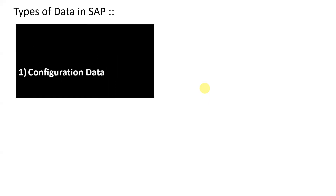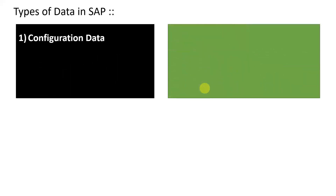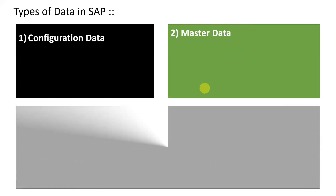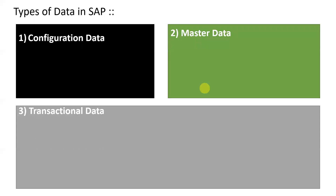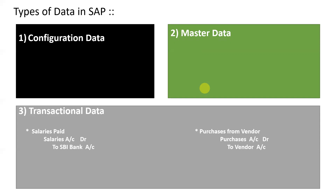The three types of data are: first, configuration data; second, master data; third, transactional data. Transactional data means the day-to-day business transactions which they are going to post in the Tally application. For their existing application, they are using Tally. What transactions are they going to post on a daily basis? That particular data — those business transactions, accounting entries, or general entries — we can call transactional data from the SAP point of view.